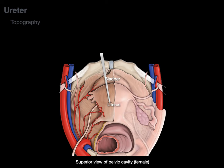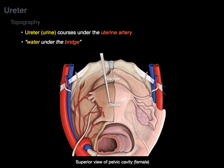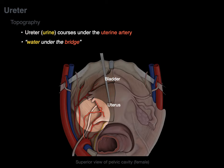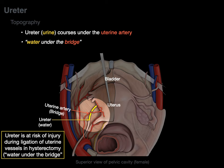This is a superior view of the pelvic cavity in a female. There is another important topographic relationship: the ureter crosses under the uterine artery. The ureter transports urine, and the uterine artery carries blood, so we call this 'water under the bridge.' This is clinically important because the ureter is at risk of injury during ligation of the uterine vessels in a hysterectomy.